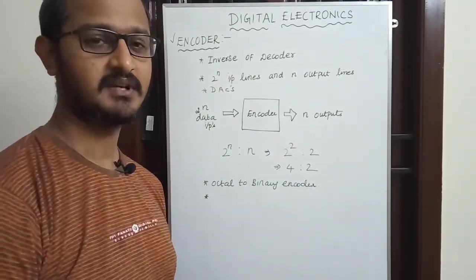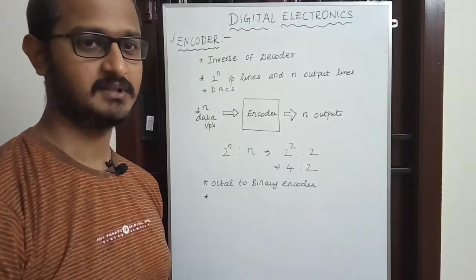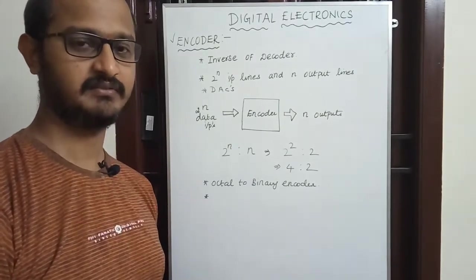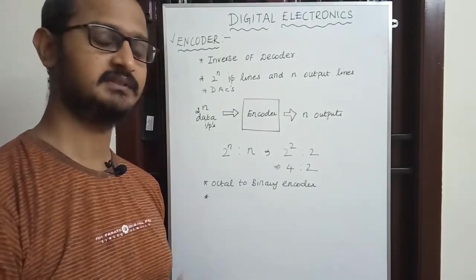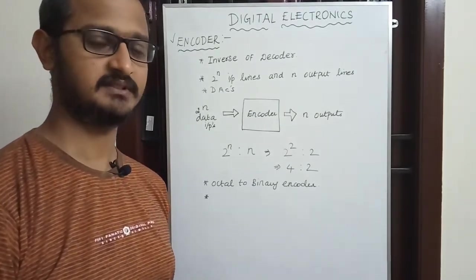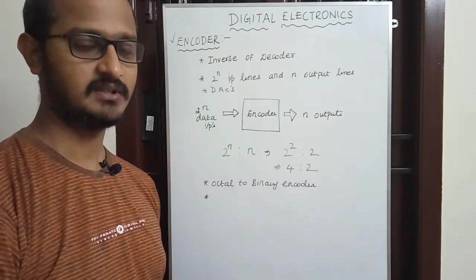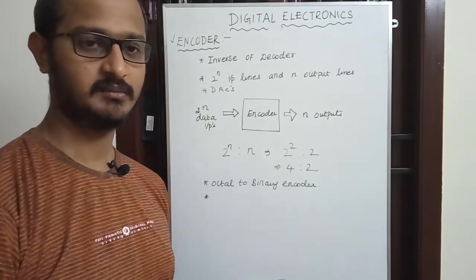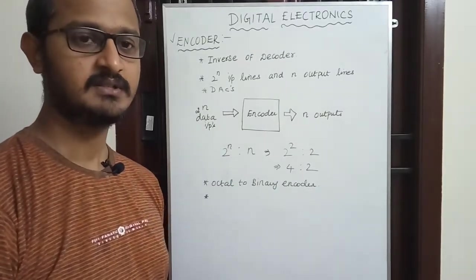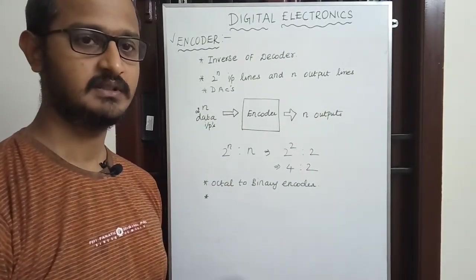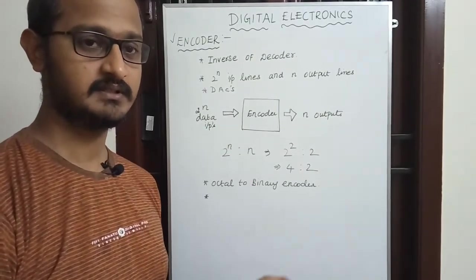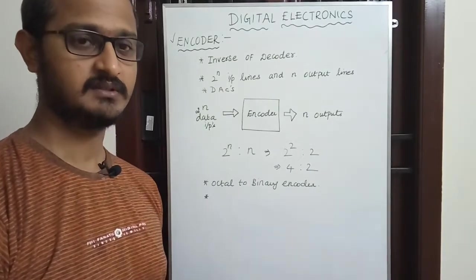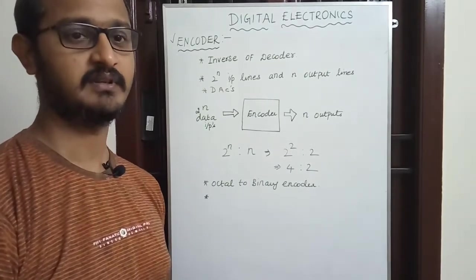Just like a Mux is the inverse of a D-Mux, and a D-Mux is the inverse of a Mux, encoder and decoder are inverses of each other. Encoder is an inverse of decoder, and decoder is an inverse of encoder.